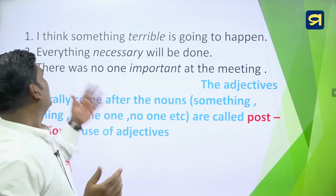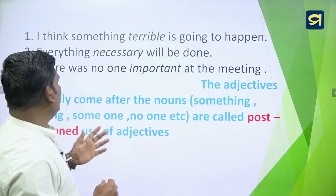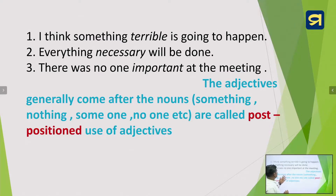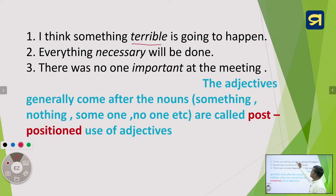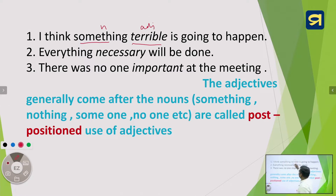Now look at these examples. First: 'I think something terrible is going to happen.' Second: 'Everything necessary will be done.' Third: 'There was no one important at the meeting.' Here, 'terrible' describes the noun 'something' — something is the noun and terrible is the adjective. It tells something more about the noun.